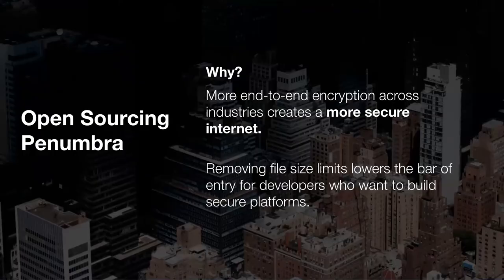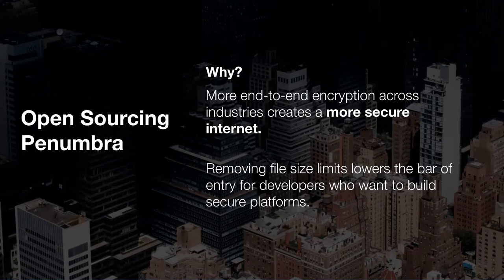We ultimately decided to open source Penumbra because we believe that encryption would be a great movement across industries to create a more secure online world. We found it hard to find libraries to do this, and so we wanted to lower the barrier of entry for other developers who wanted to build secure applications. This technology could be used for other things such as video chat or file transferring systems. Most of those right now have a file size limit, and we'd hope to allow file drops to even be incorporated into those messaging platforms. Or say you're a human rights or activist group and you need to send data securely between people in disparate places.